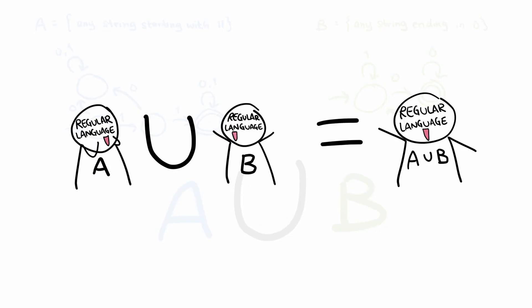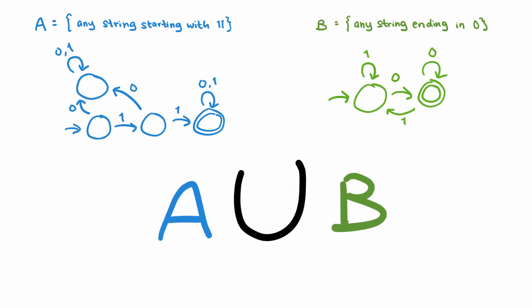Remember, we are doing this to show that the union of two regular languages will still be a regular language. So, since the union of A and B means the resulting language will contain all strings that are either in A or B.